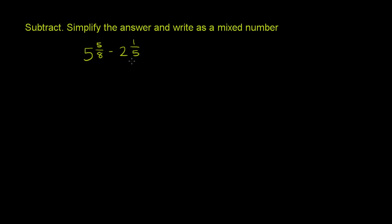And like when you're adding mixed numbers, you can do it two ways. You can either turn both of these into improper fractions and then subtract, or you can subtract the whole number parts and then the fraction parts. So let's do it that way.